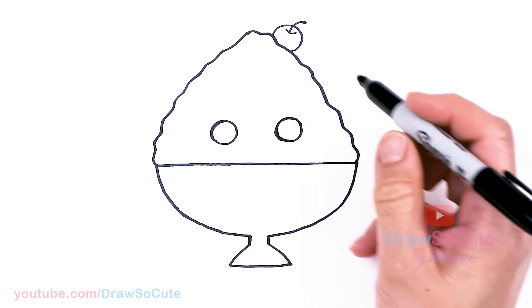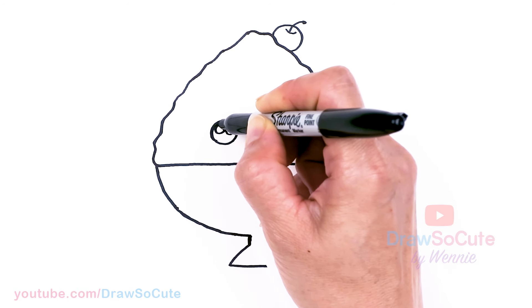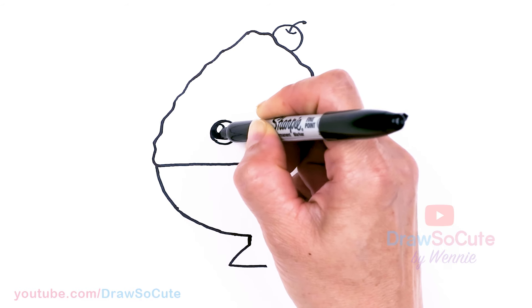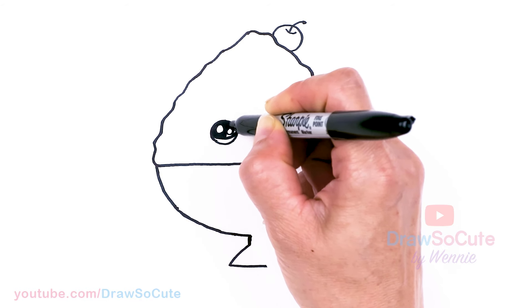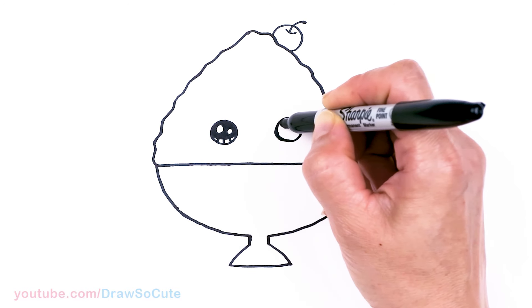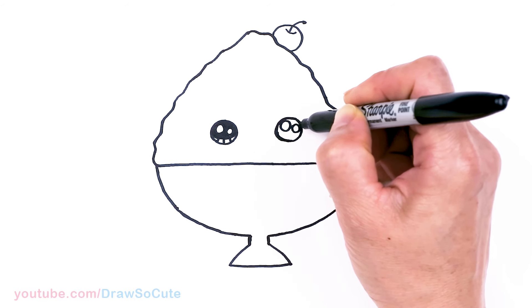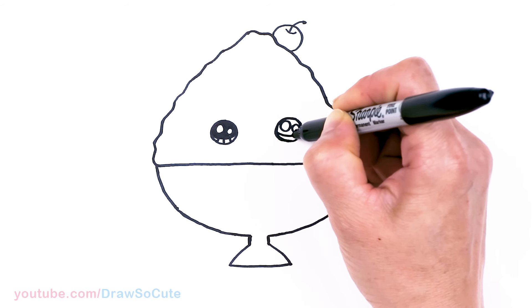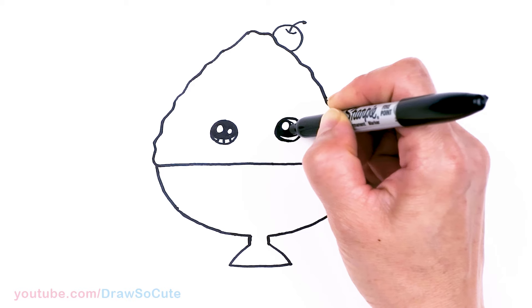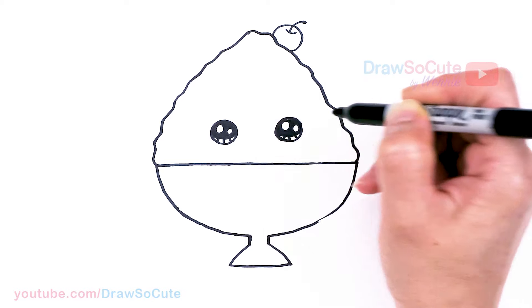Now my two circles are in. I'm going to make them Draw So Cute eyes with two small circles inside for highlights, and a curved line at the bottom, and shade in the top. And lines at the bottom. Same thing over here. There.